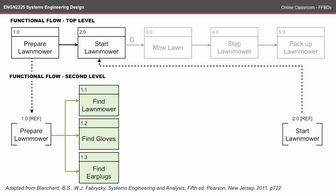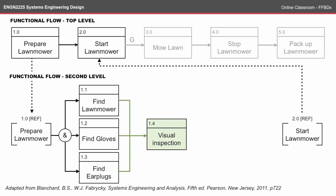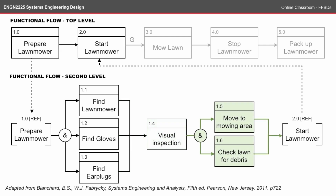I'm going to do all of those things at the same time, so I'll use an AND — meaning I won't move to the next step until all those steps are complete. Next, I'll do a visual inspection to make sure the lawnmower is in good condition. Then I'll move into the mowing area and at the same time check the lawn for debris. Again, I'm not going to start the lawnmower until both of those steps are complete. Some people might use an OR here because they might check the lawn as they go, or the lawn might be too big to check all at once.